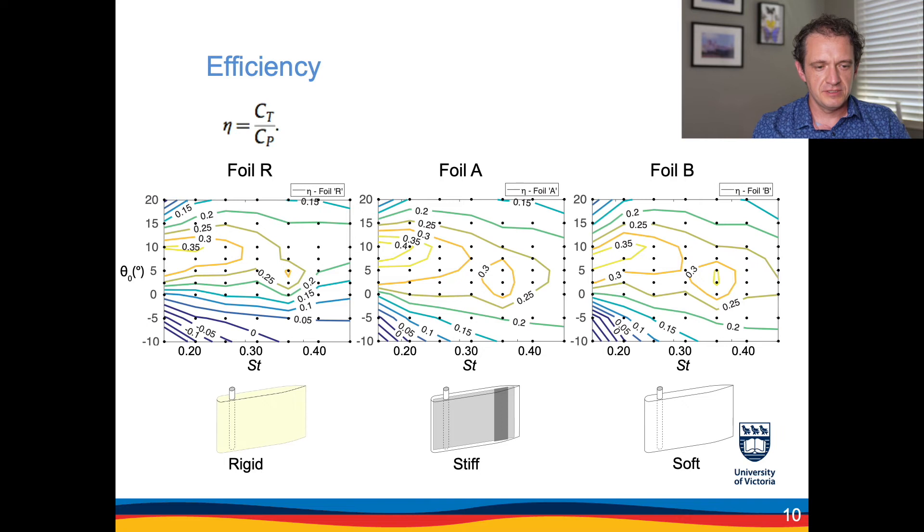It hints that the range of practically achievable operating conditions would be larger for flexible foils than for the rigid ones. Also an interesting observation is that previous studies showed that increase in efficiency of the flexible foils compared to the rigid foils is typically achieved at the expense of the generated thrust. However, this set of experiments shows that there exists a set of operating conditions for which both thrust and efficiency are higher for flexible foils.